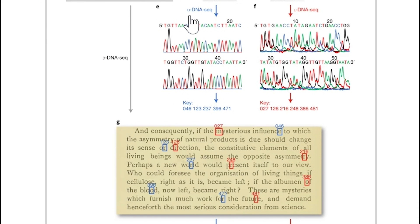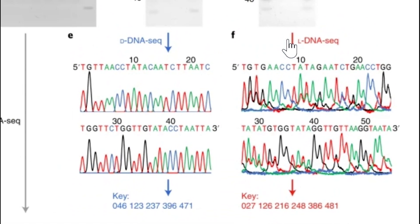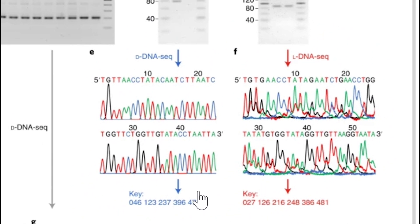Because again, the way we sequence DNA depends on enzymes. Enzymes are proteins and those proteins recognize D-DNA, not L-DNA. And so there are two different methods to sequence the DNA. And so if you just use the conventional approach, you would miss the hidden message.